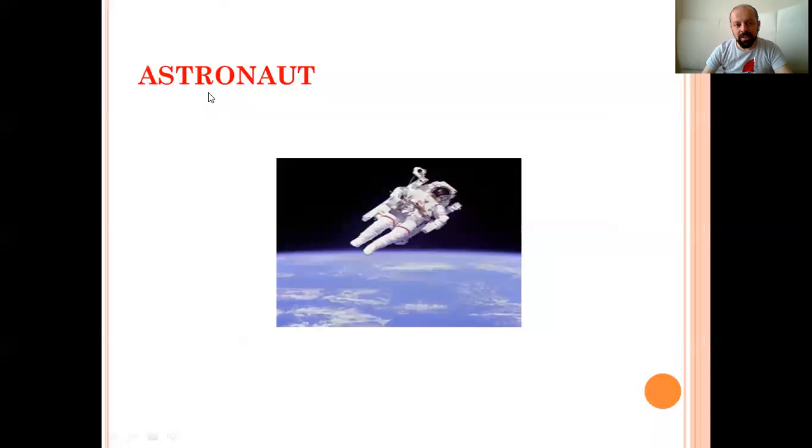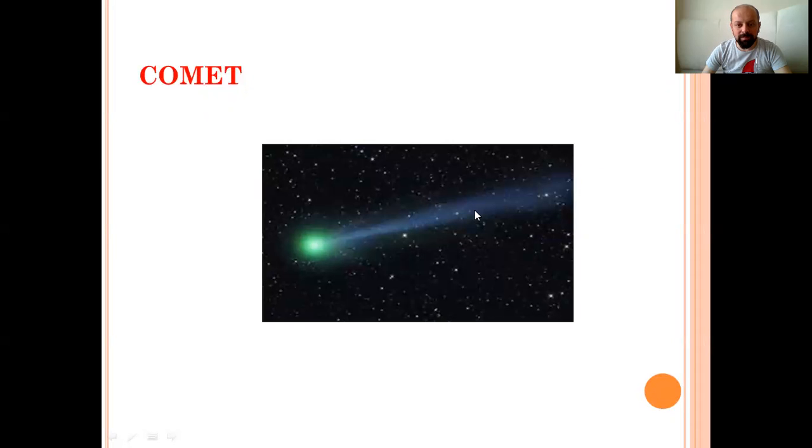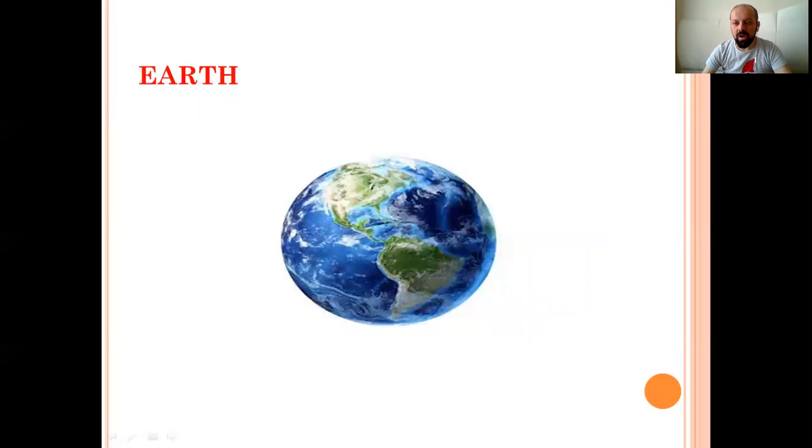Astronauts. Yes, in Turkish meaning astronot. They are so similar to each other. Astronauts. Comets. A star with their tail. In Turkish meaning kuyruklu yıldız. Okay, comet. Earth. Yes, the other name is world or in Turkish dunya you can see here. Yes, we live in the Earth.